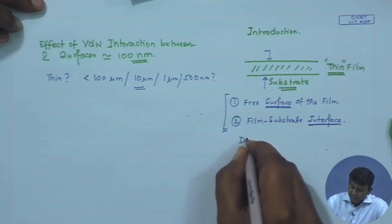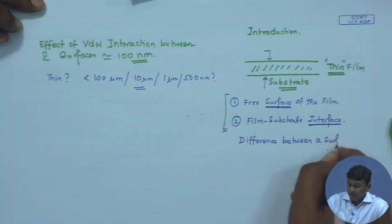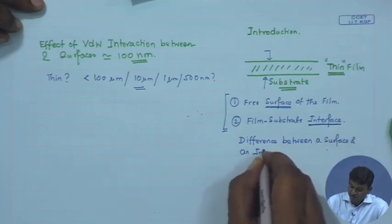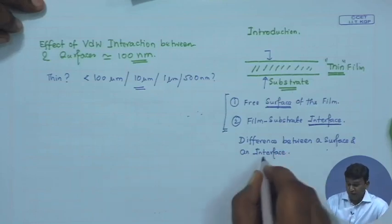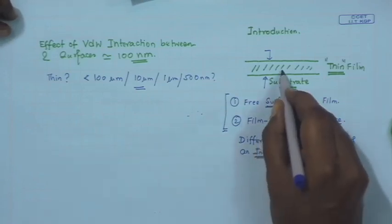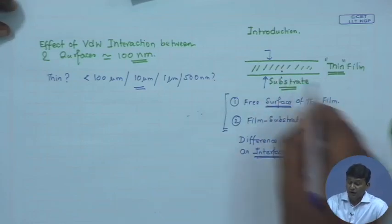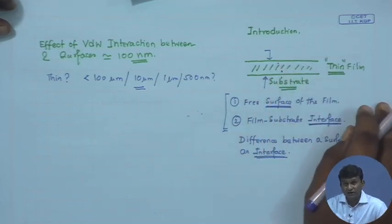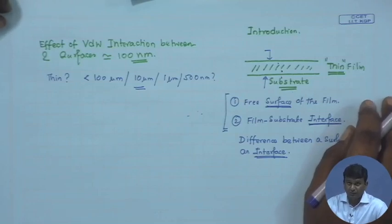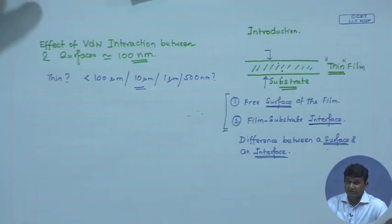What is the difference between a surface and an interface? When two condensed phases are in contact — like a film and a substrate material — they give rise to an interface. However, when a condensed phase is in contact with a non-condensed phase such as gas or vacuum, it is called a surface. That is a very important classification — we often use them interchangeably, but in science surface and interface are different things.